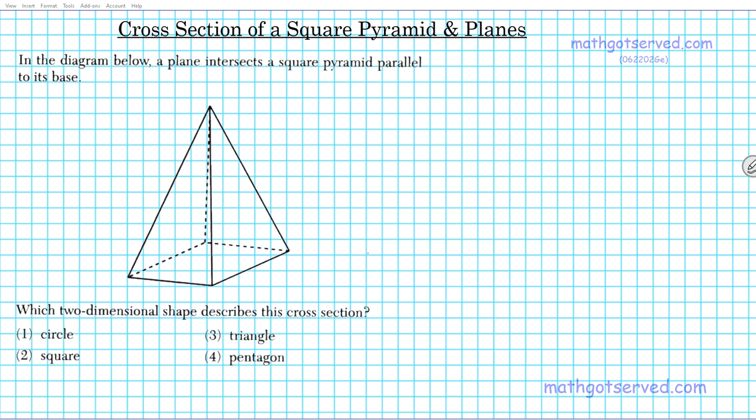Good day students, welcome to mathgotserved.com. In this clip we're going to be taking a look at the cross section of a square pyramid and planes. The question reads: in the diagram below, a plane intersects a square pyramid parallel to its base. Which two-dimensional shape describes this cross section?